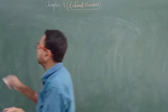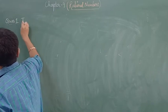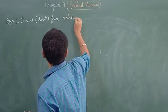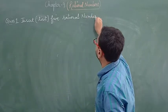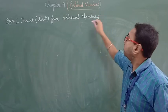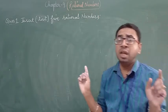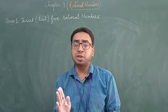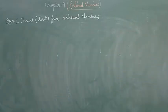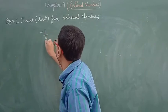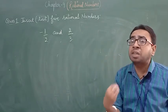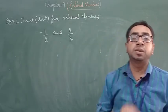Let's come to exercise 9.2, question 1: insert rational numbers between two given numbers. If any two rational numbers are given, we can insert as many rational numbers as we want, because there are infinite rational numbers between any two rational numbers. Let's take minus 1 by 2 and 2 by 3. For inserting, the denominators must be the same.